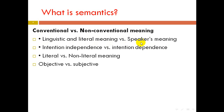Conventional meaning refers to the linguistic and literal meaning conveyed by words and phrases. Non-conventional meaning is the speaker's meaning — what the speaker wants to convey. Conventional meaning is intention-independent, meaning it does not depend on the speaker's intention. Non-conventional meaning is intention-dependent. Conventional meaning is objective; non-conventional meaning is subjective, depending on the person's point of view.